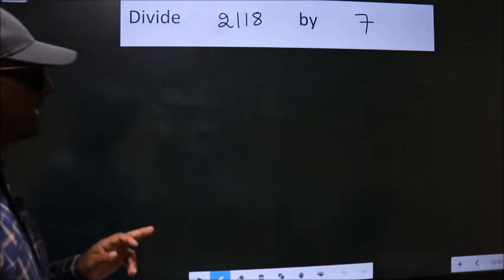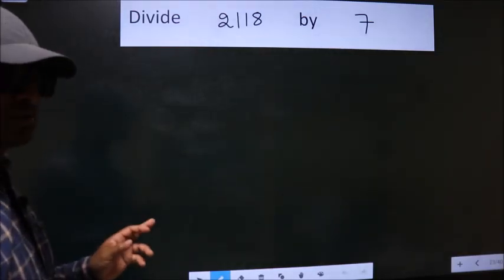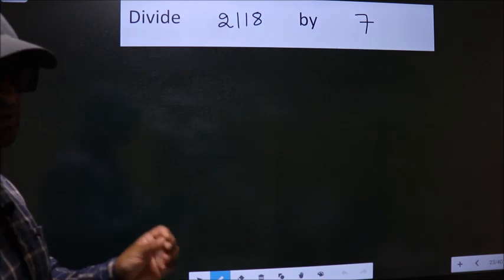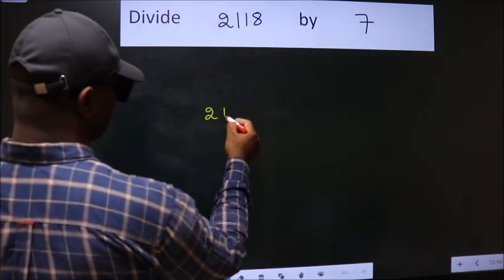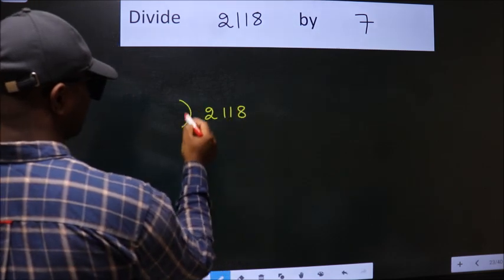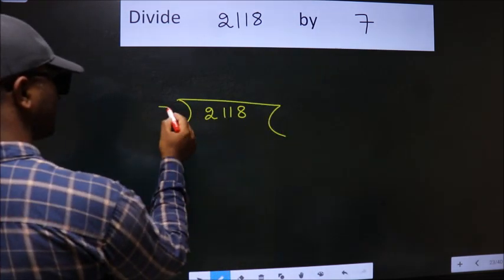Divide 2118 by 7. To do this division, we should frame it in this way. 2118 here, 7 here.